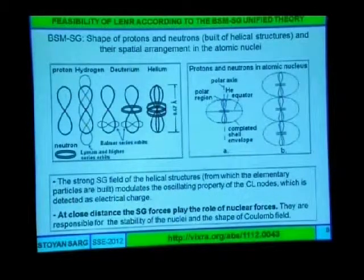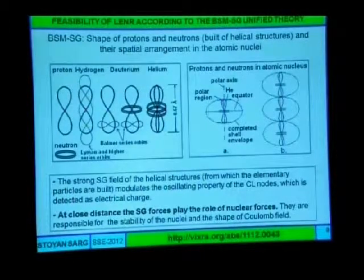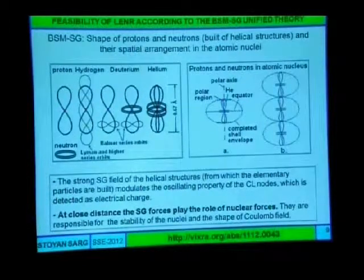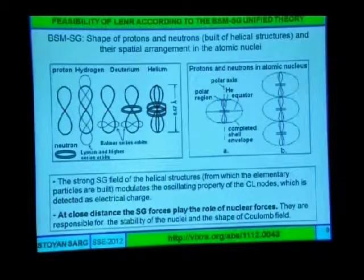Here are the atoms: protons, hydrogen atoms, this is the electronic orbit, deuterium, helium. And the more complex atoms — we distinguish because this is the most dense structure, it stays in the middle. So in more complex atoms, it becomes like this.